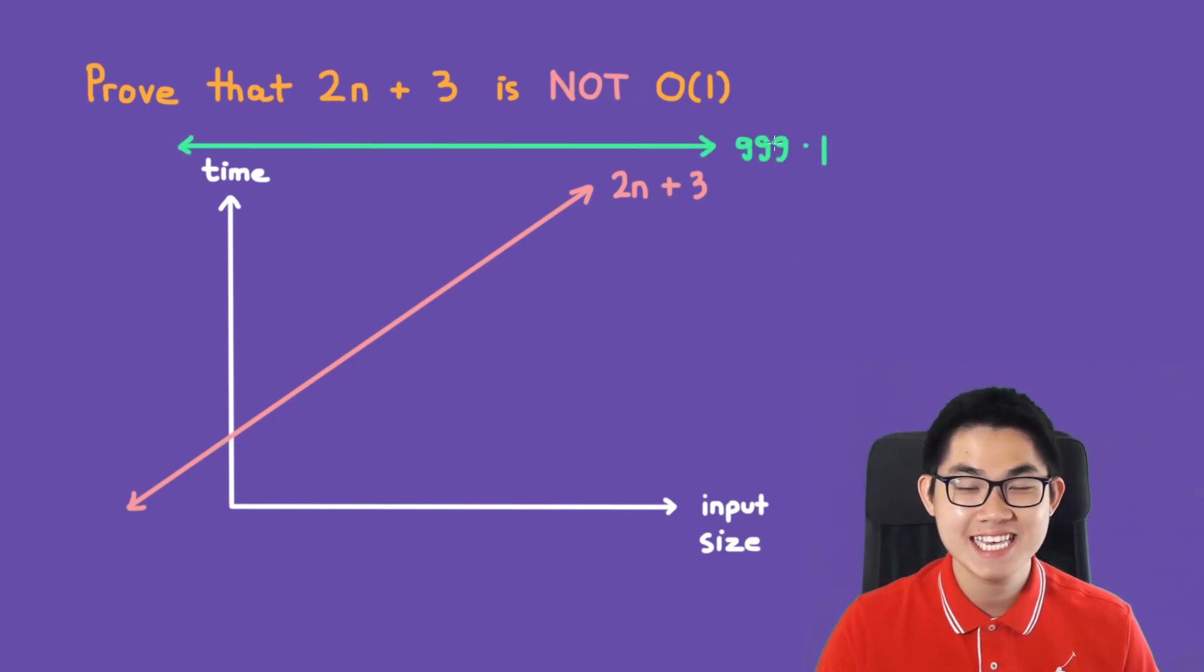So even if we make c an extremely large number like 999, at some point the red function will intersect the green function and grow faster than the green function. So that's how we know that 2n plus 3 is not O(1). And that is exactly what we want to prove.